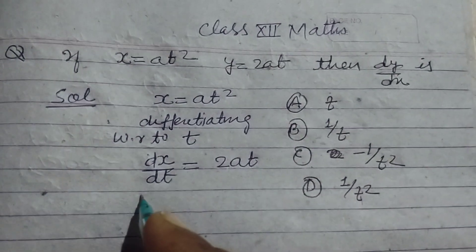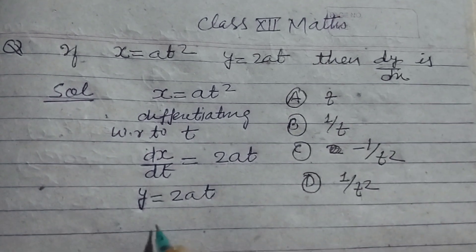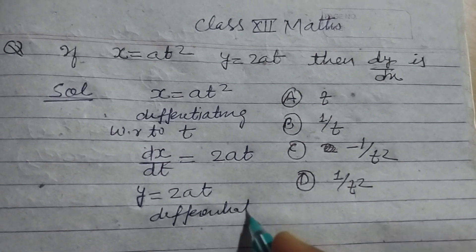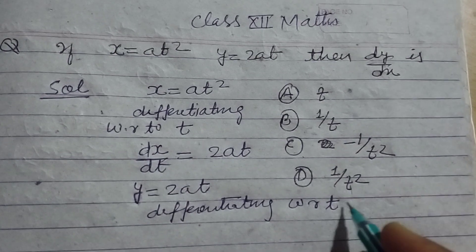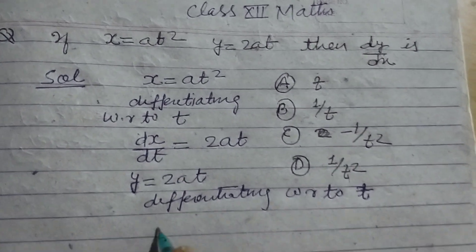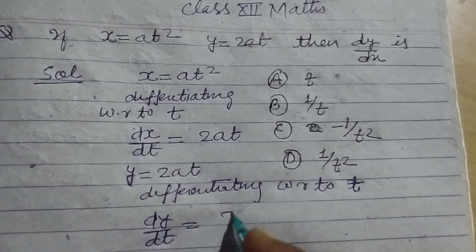And it is also given that y equals 2at. Now differentiating this with respect to t, we get dy/dt equals 2a.